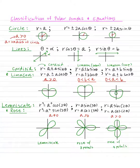Let's go with the classification of polar graphs and equations. All the things you need to know are listed here: circle, lines, cardioid, limaçon, lemniscate, and rose.